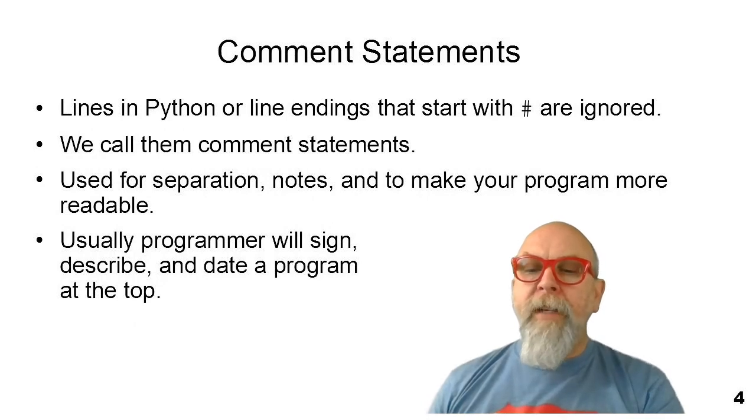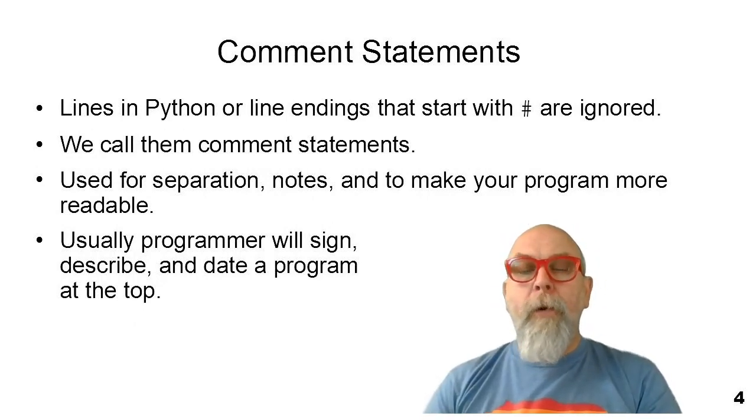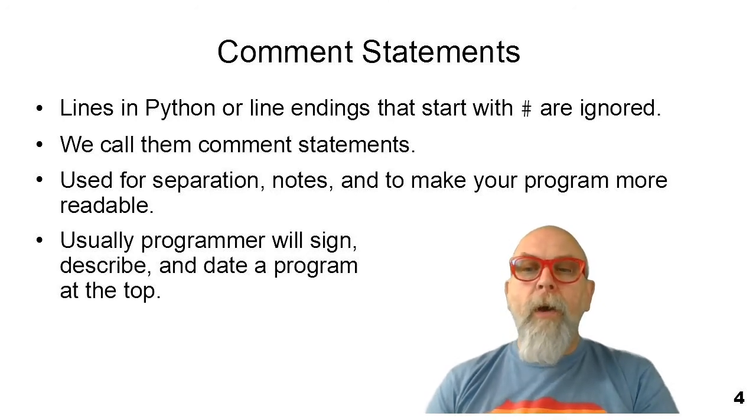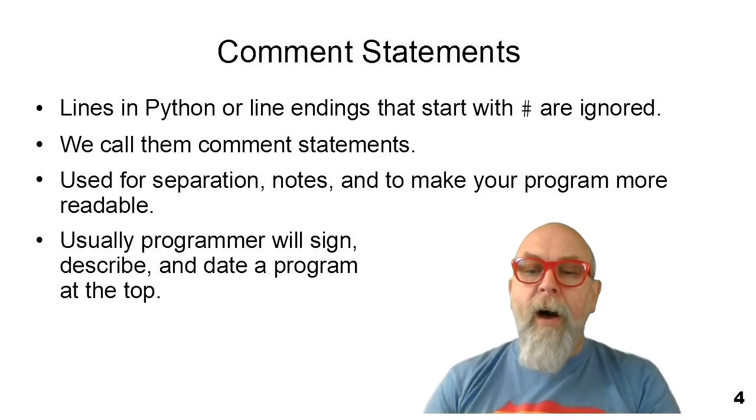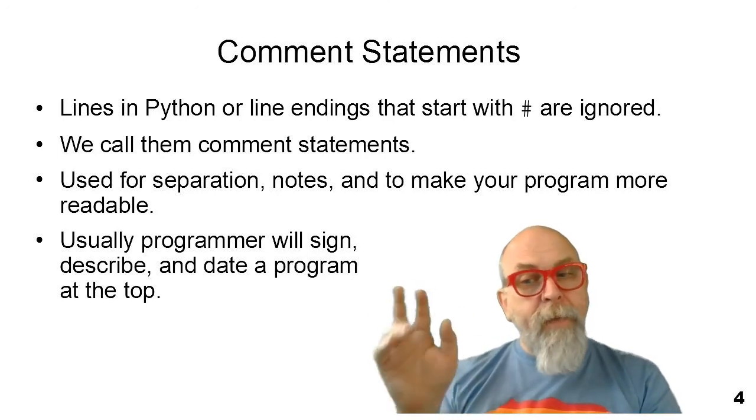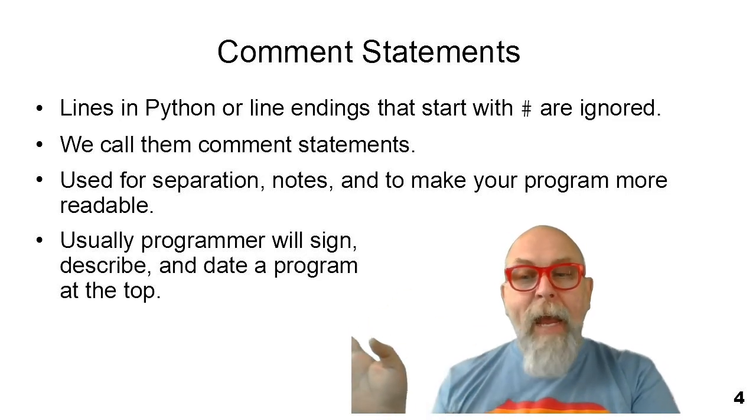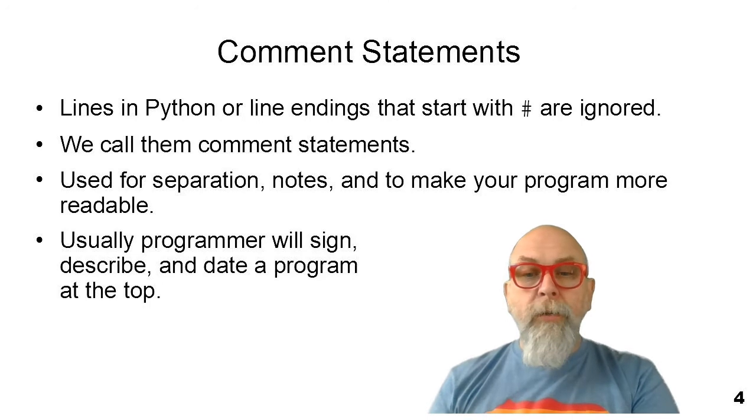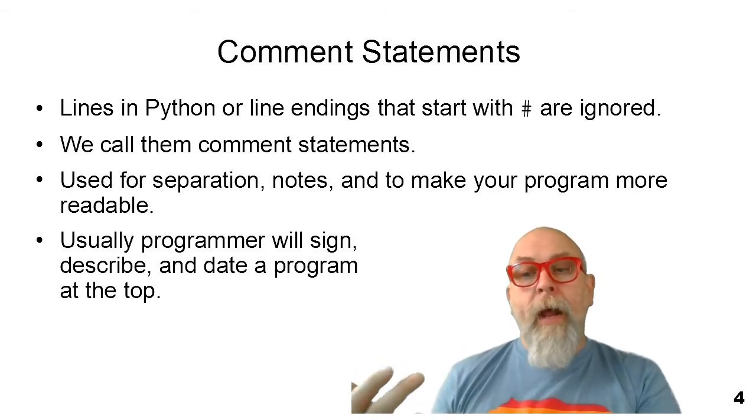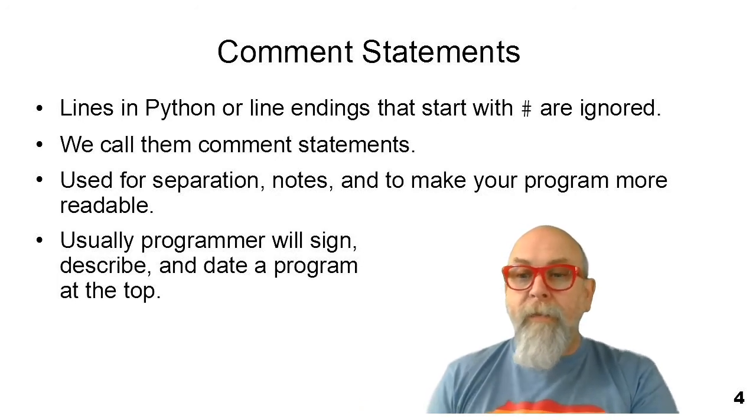When a computer program becomes extremely complex, it often becomes necessary for programmers to put messages to themselves or future programmers that may be using or modifying this code. We call those statements comment statements, and in Python, any computer line that begins with a pound sign, or at the end of a statement if there's a pound sign, you can then place text, and the computer, Python, ignores those texts. We call those texts comment statements. They're used for notes, separation, and to make your program more readable. When I create an especially complex program, I'll put comments every so many statements just to remind myself what I was doing when I have to come back and fix that program in a year or two or even six months.